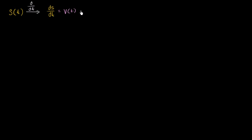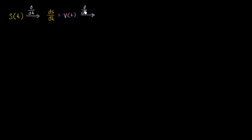Now, what if we were to take the derivative of that with respect to time? We could either view this as the second derivative — we're taking the derivative not once, but twice of our position function — or we're taking the derivative with respect to time of our velocity function. This gives us dv/dt, the rate at which velocity is changing with respect to time. And that's also called acceleration, our acceleration as a function of time.